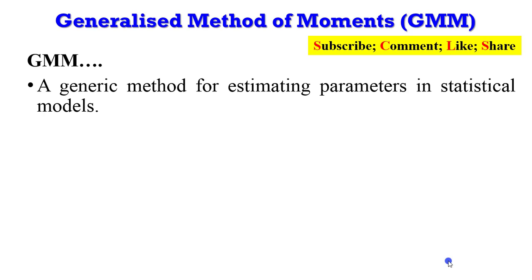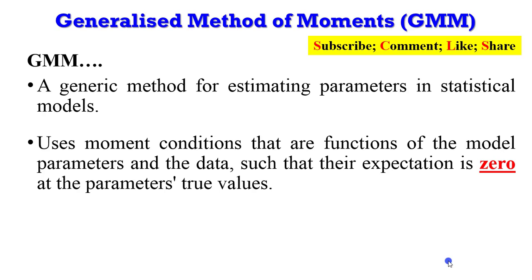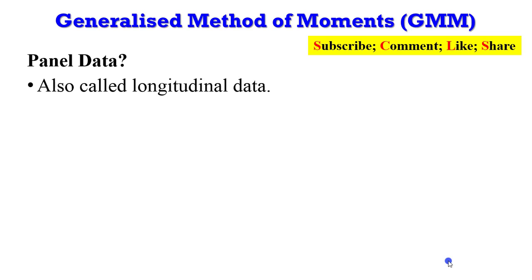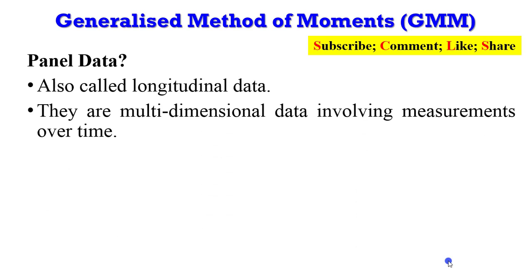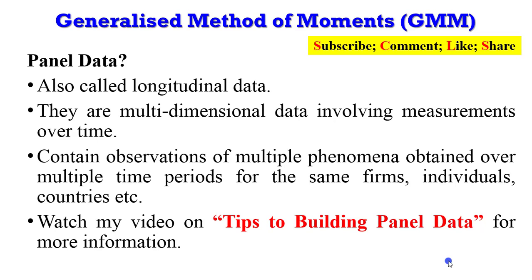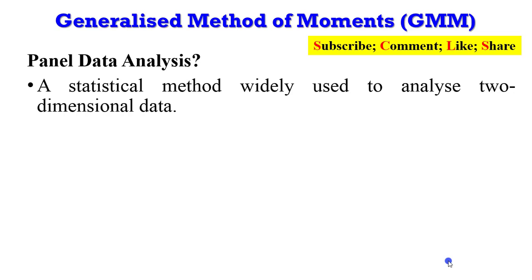So let's dig in. What is GMM? It is a generic method for estimating parameters in statistical models. It uses moment conditions — moment conditions are simply instruments that are functions of the model parameters and the data such that their expectation is zero at the true parameter values. GMM is also a dynamic panel data estimator. Panel data, also called longitudinal data, is multi-dimensional data involving measurements over time, containing observations of multiple phenomena over multiple time periods for the same units — firms, individuals, countries, etc.